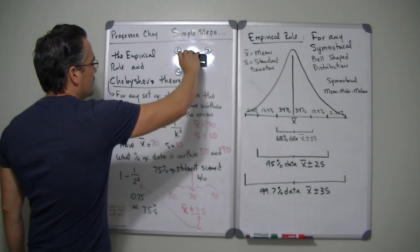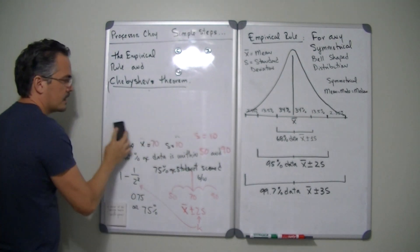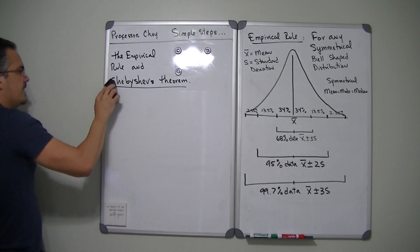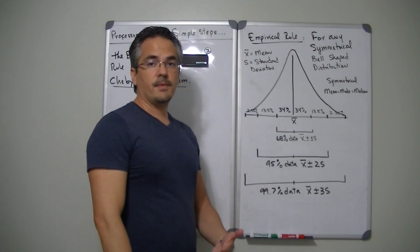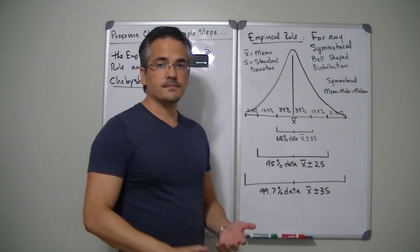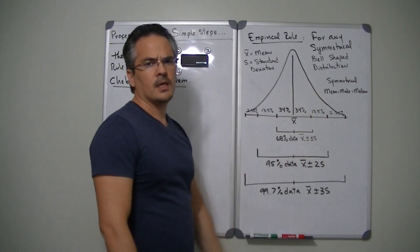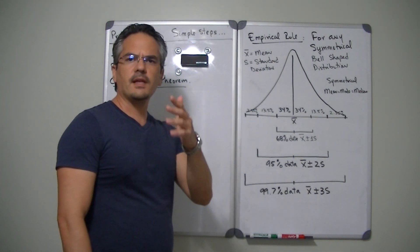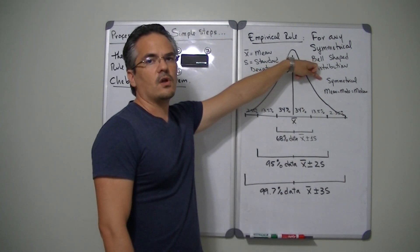Now let's talk about something called the empirical rule. The empirical rule is more specific and gives you a better approximation of data, but you have to make sure that your data is in fact bell-shaped and symmetrical. The way you figure out whether something is bell-shaped is you have to basically plot it. If you want to figure out whether something is symmetrical, the Pearson coefficient of skewness will help — I have another video explaining how to calculate that.